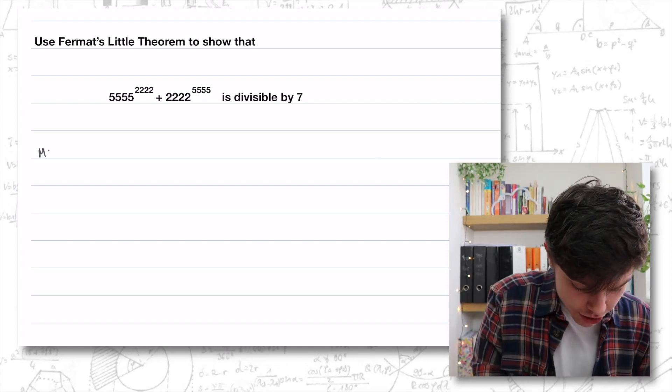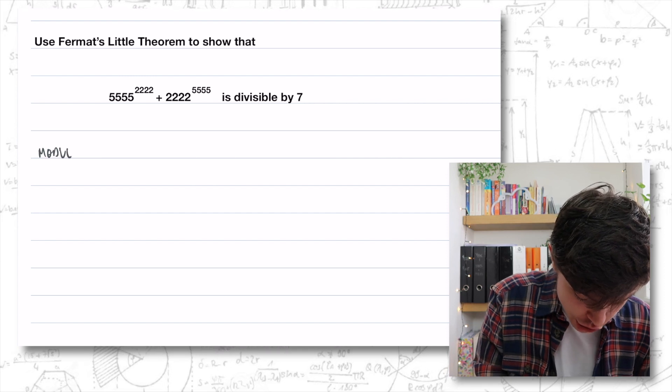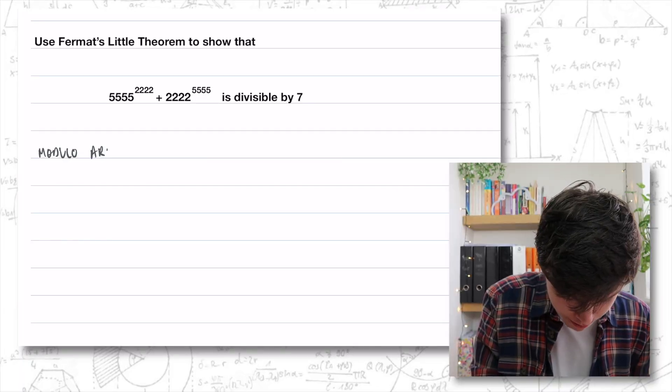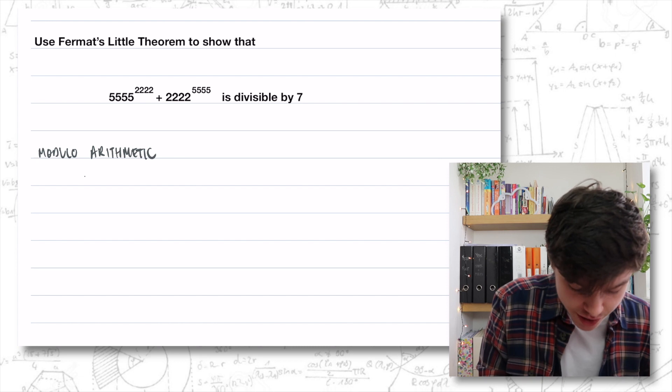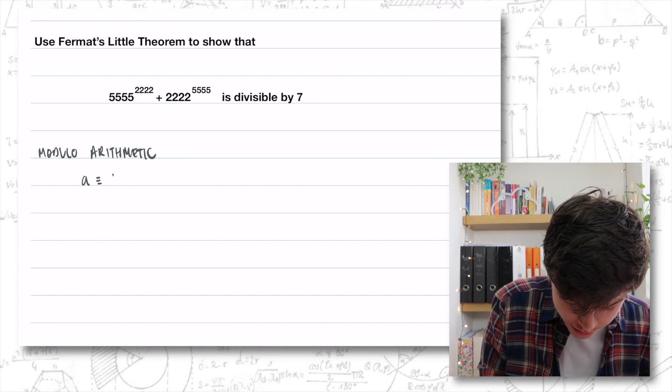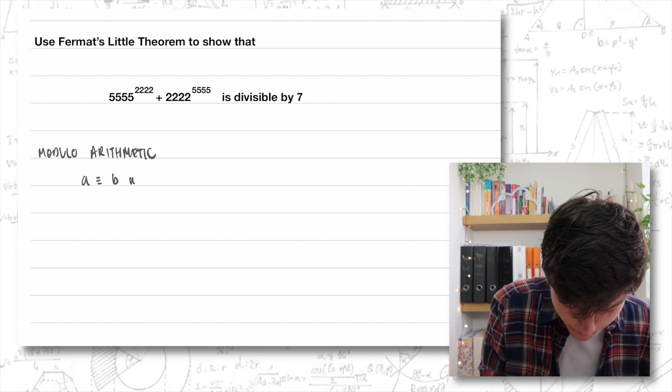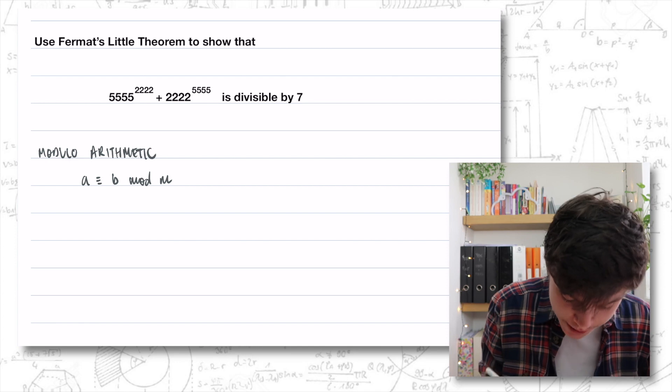Modulo arithmetic works a little bit differently to normal arithmetic. We have this notation and we reduce modulo to three letters 'mod', and we say that A is congruent to B mod M. So A is congruent to B modulo M, but we just say mod for short.